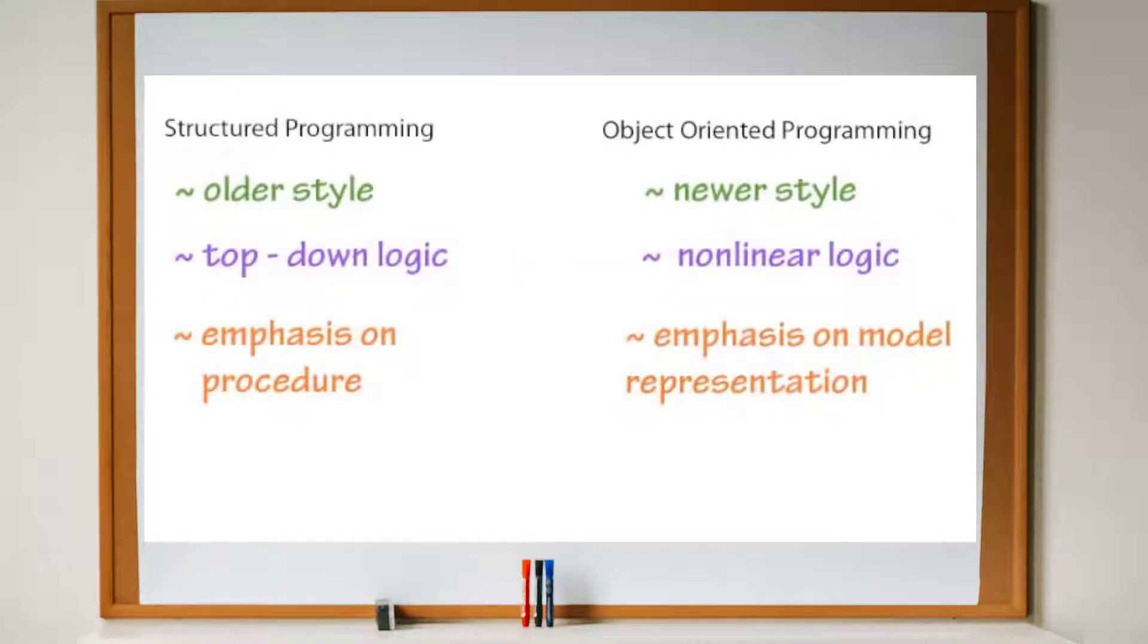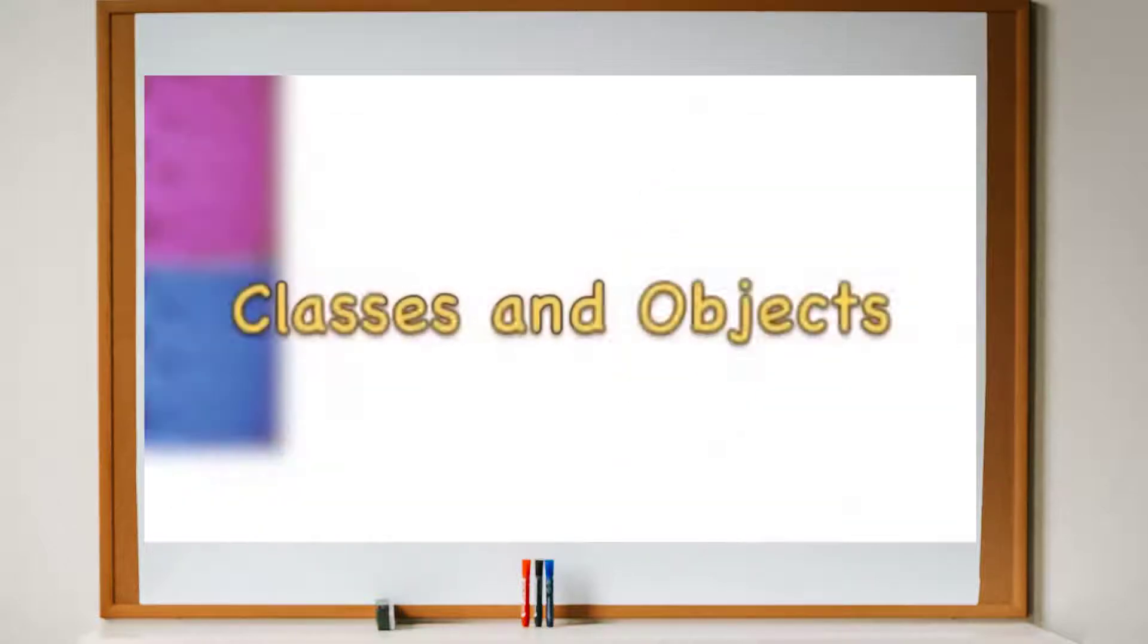Object-oriented programming is more concerned with representing models or objects. Structured programming is closer to assembly language, therefore it's lower in abstraction than object-oriented programming.